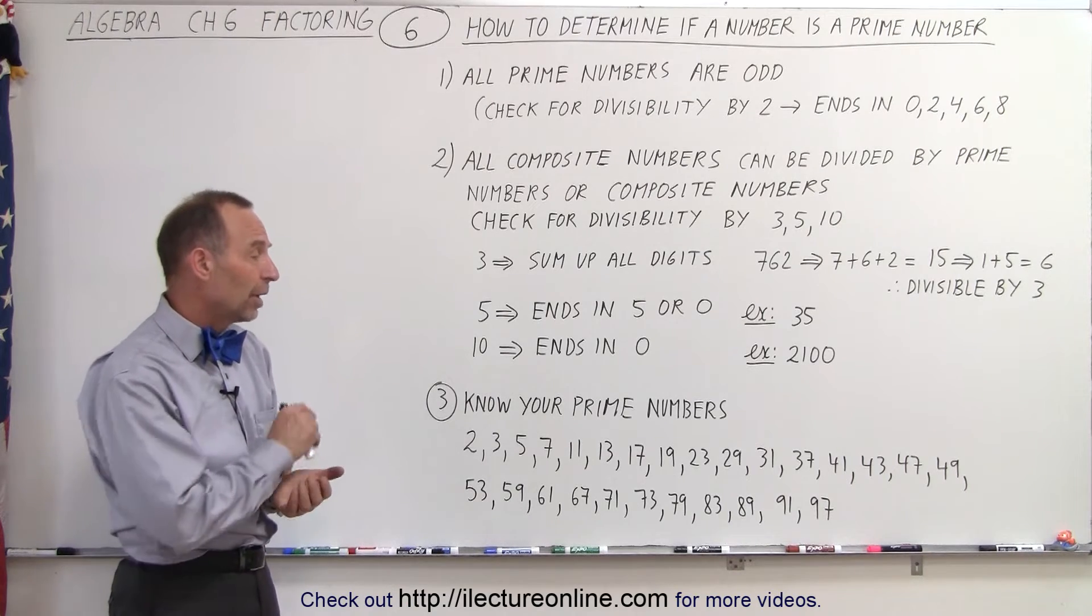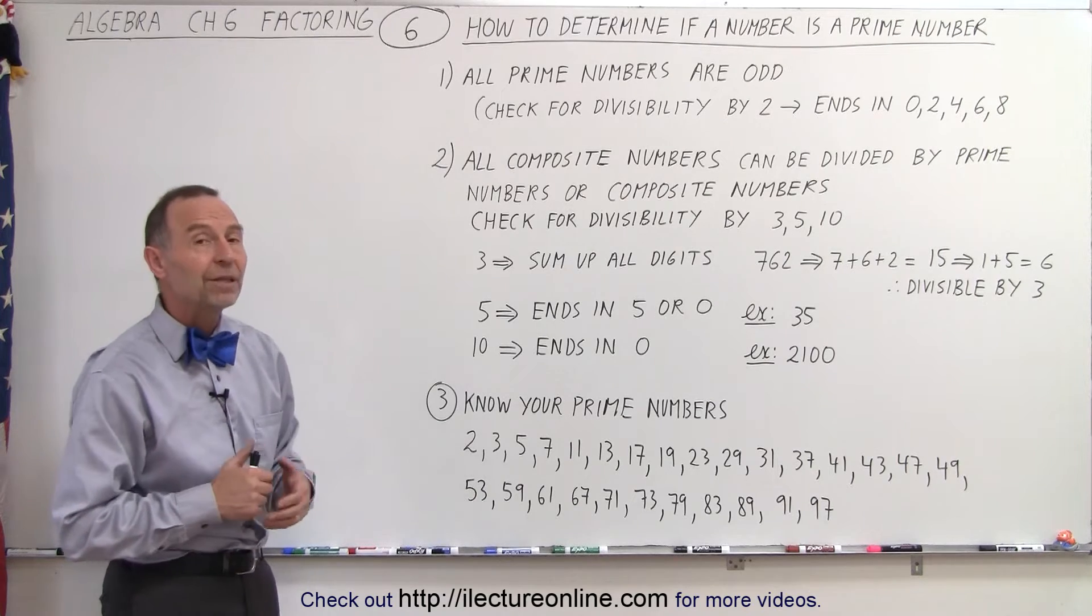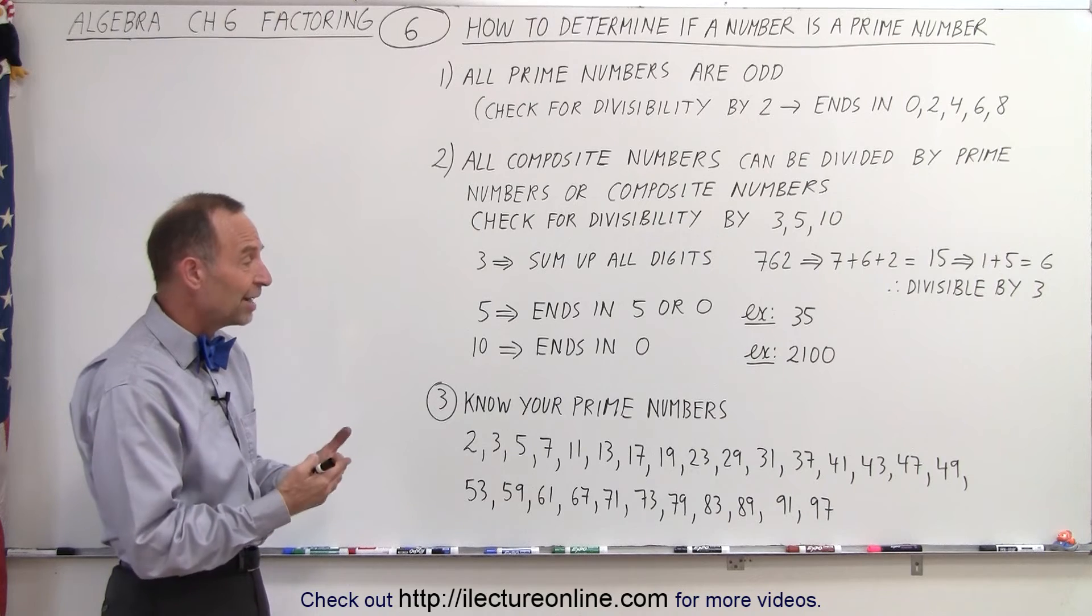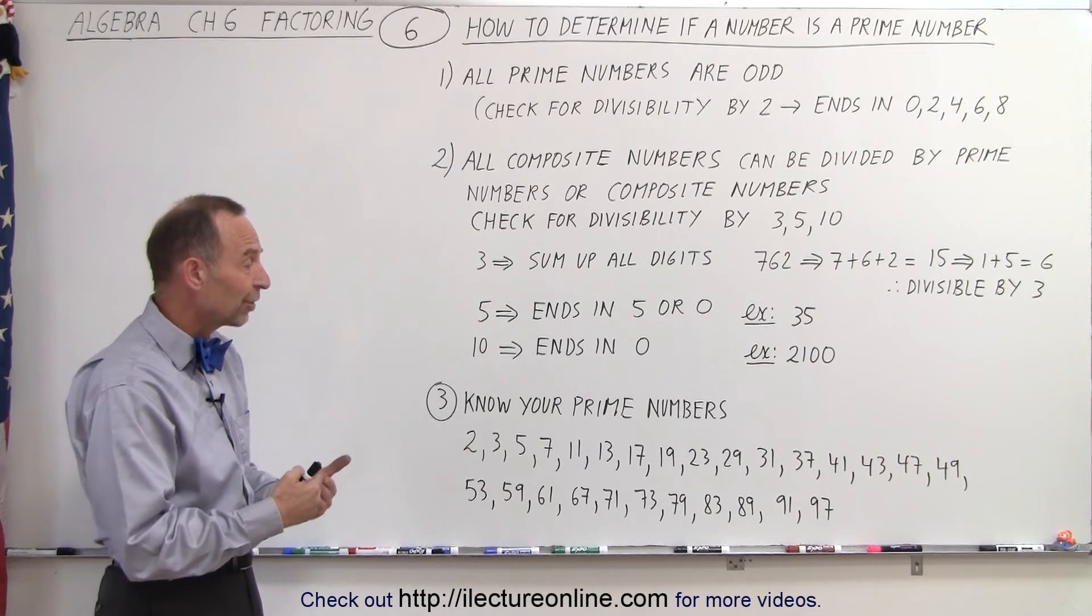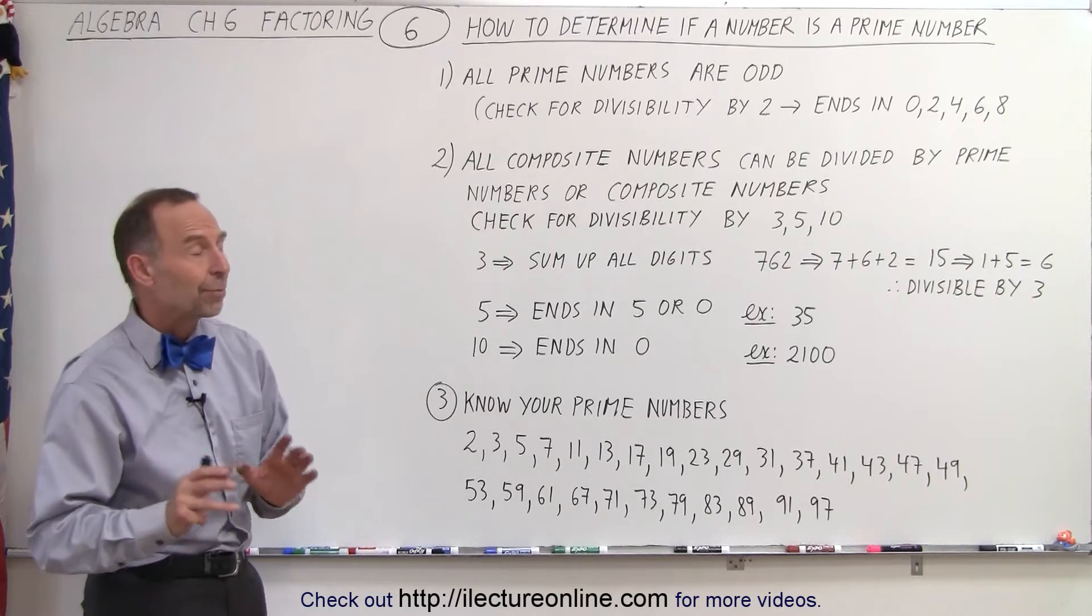Do you see the pattern? Well obviously none of them are even. None of them can be divided by 3, and none of them end in a 5. So if it's not even, doesn't end in a 5 or a 0, and it cannot be divided by 3, then you suspect it might be a prime number.